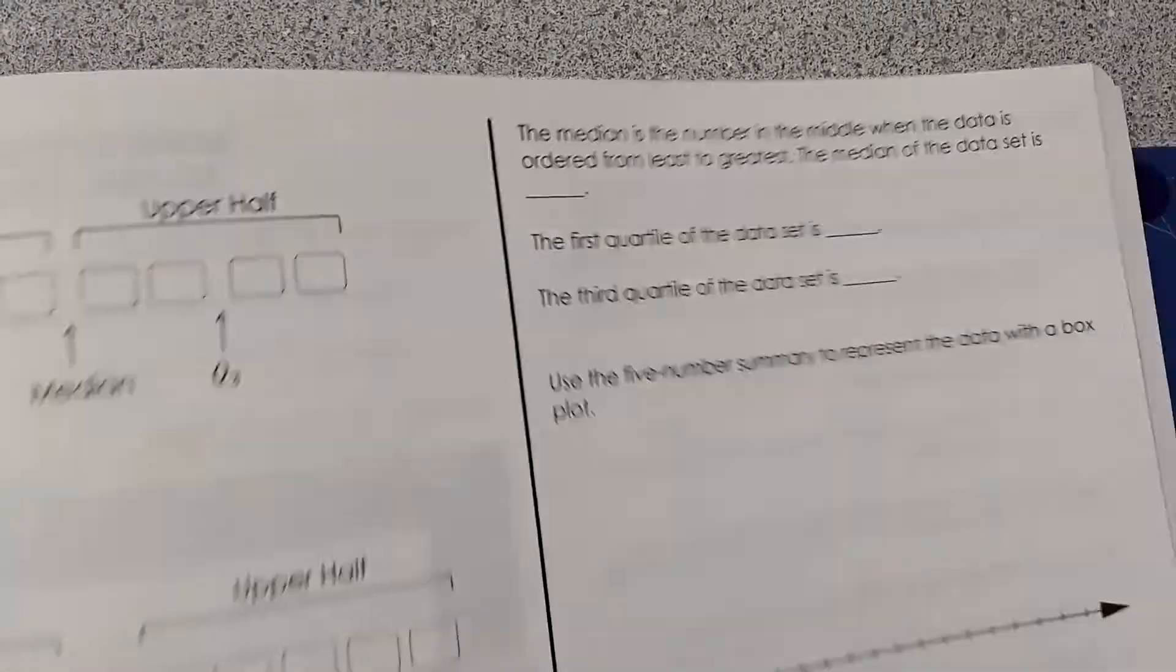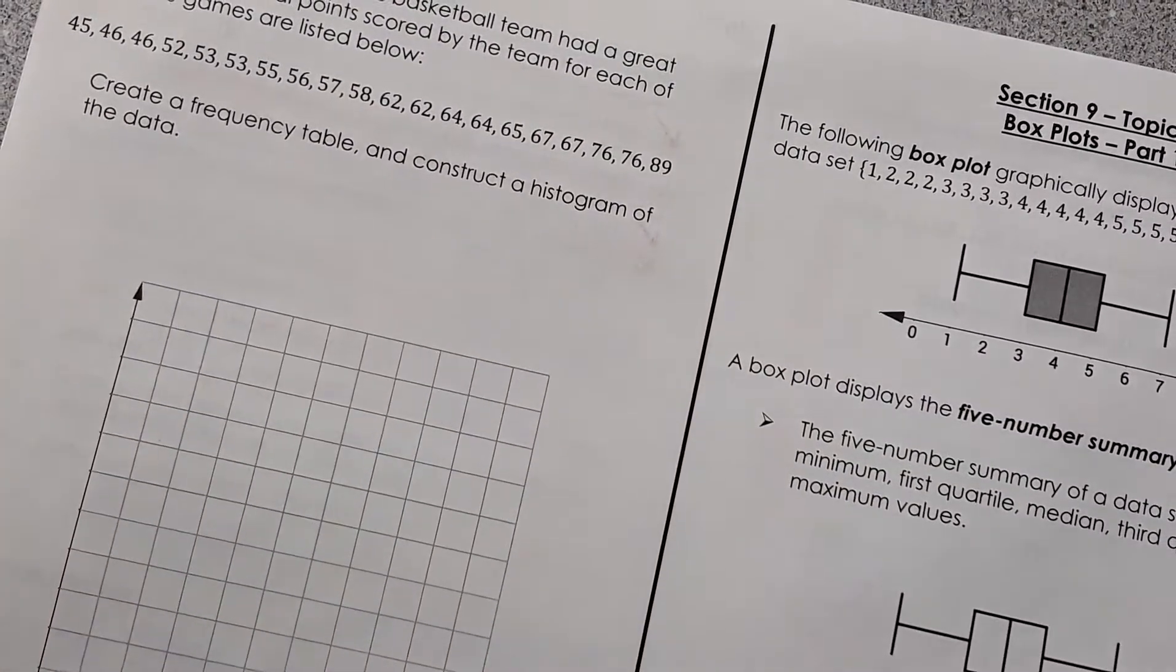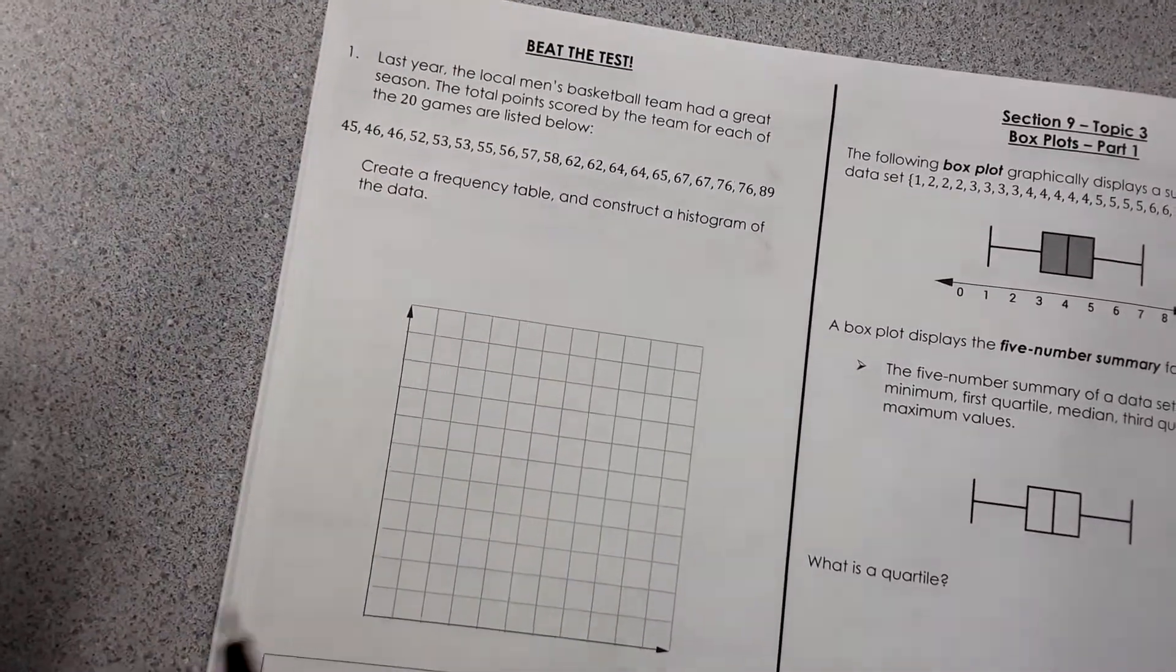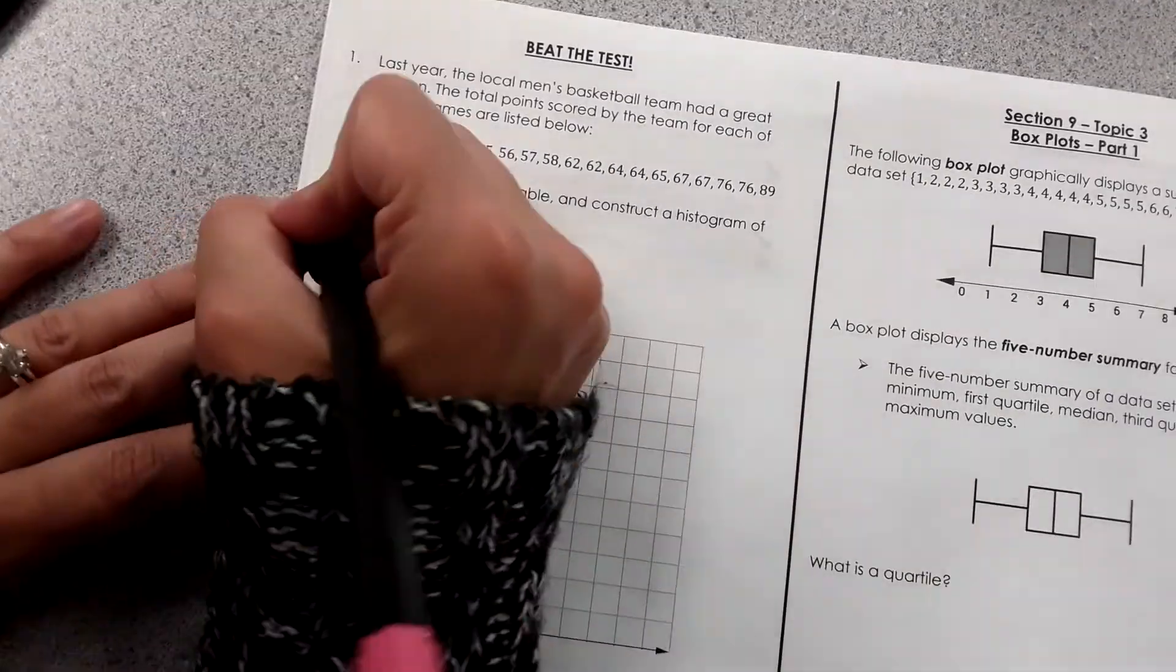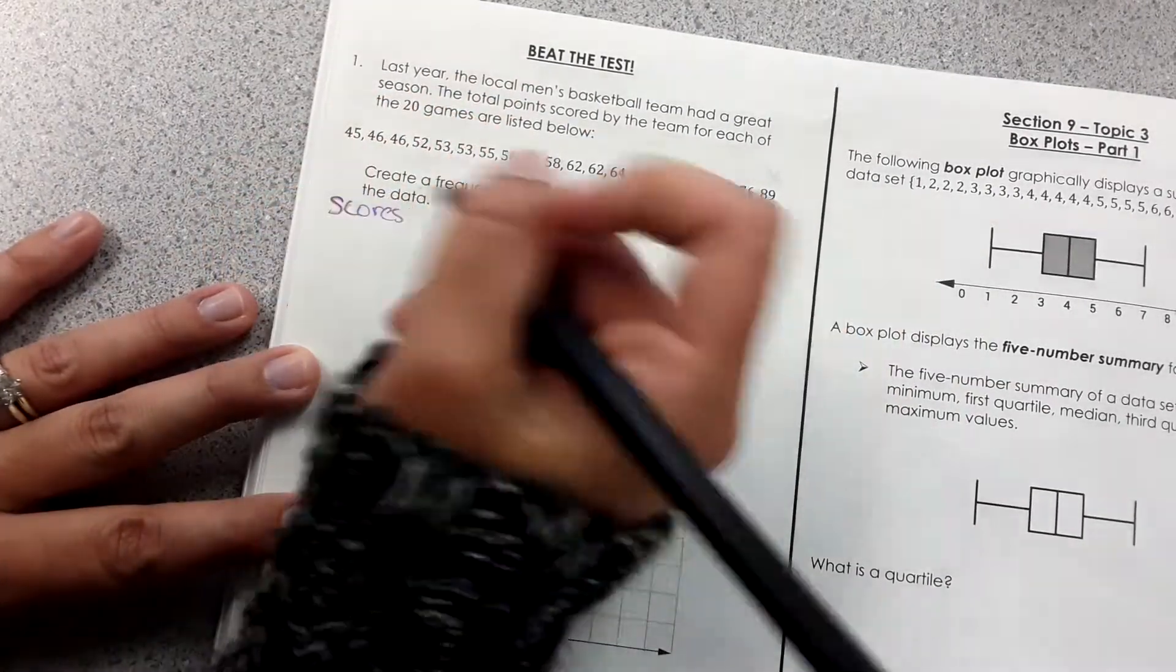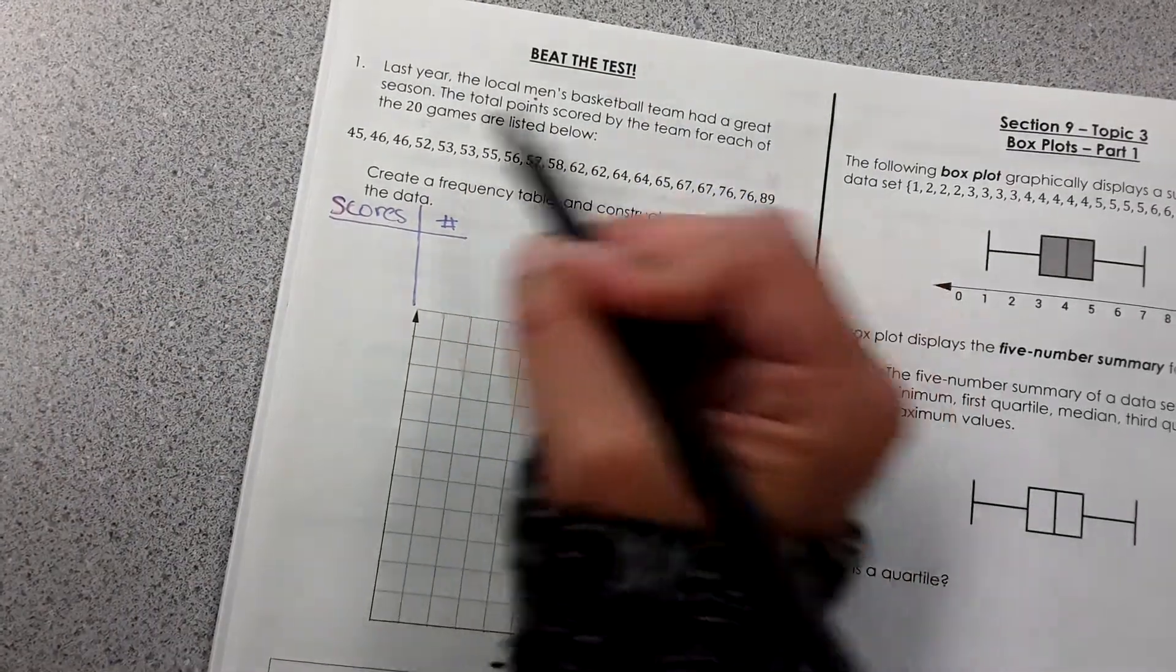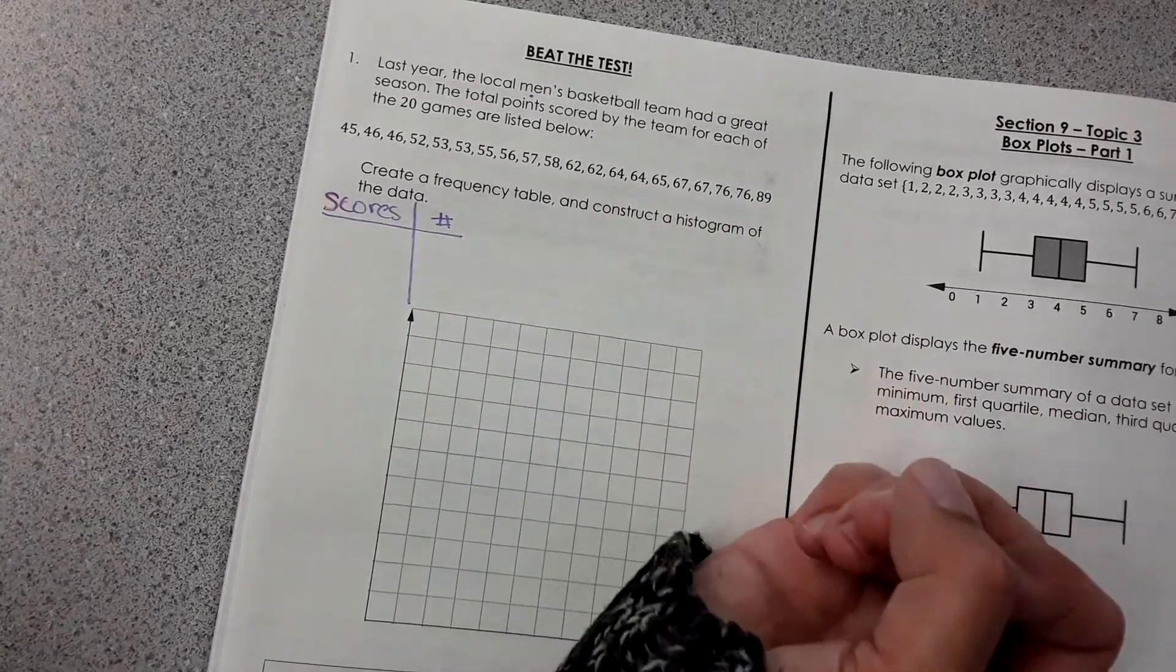Okay, then beat the test. Okay, create a frequency table and construct a histogram of the data. They didn't give us any room for the frequency table. That's lame. Okay, we'll have to squeeze it in here somehow. Let me see what I did here. Okay, so scores. Use a different pen because that one didn't show up. Scores and number. So last year, the local men's basketball team had a great season. The total points scored by the team for each of the 20 games are listed below. Create a frequency table and construct a histogram of the data.